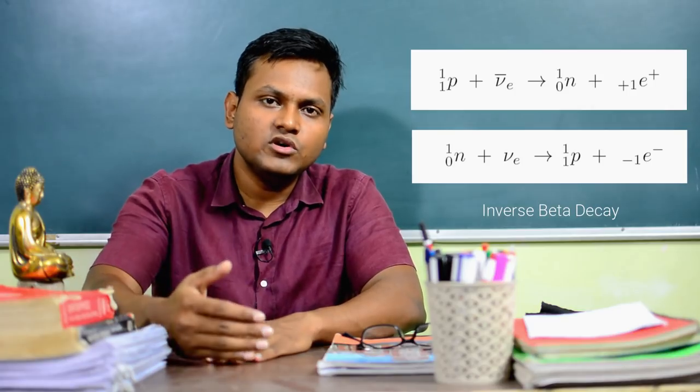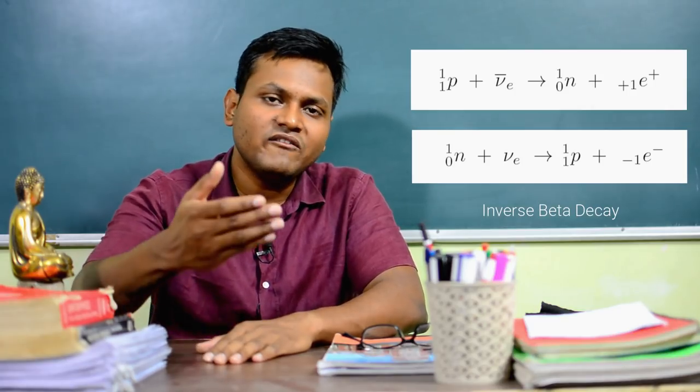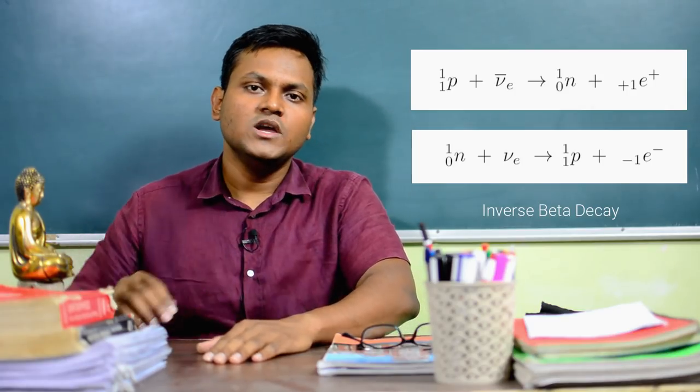We can also have inverse beta decay processes, in which instead of neutrinos being emitted, neutrinos are absorbed. A proton or neutron can absorb a neutrino or an anti-neutrino to carry forward a beta decay reaction. These are known as inverse beta decay reactions.